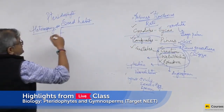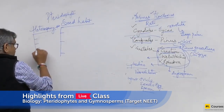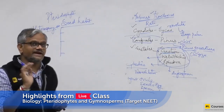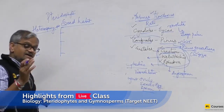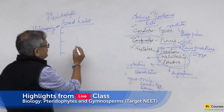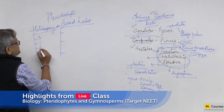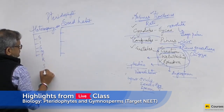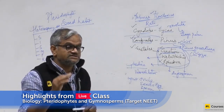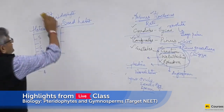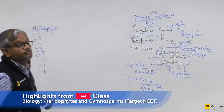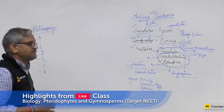Do all pteridophytes show heterospory? No — only eight genera show heterospory, not all plants. You do not have to remember all eight. The formula is 'SISMPRS A' — the first alphabet of all eight genera. All other pteridophytes have homospory; only these eight genera have heterospory.